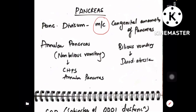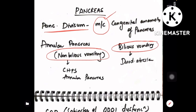The most common congenital anomaly of pancreas is pancreatic divisum. For annular pancreas, the vomiting is non-bilious, whereas bilious vomiting is seen in duodenal atresia. Non-bilious vomiting is seen in two disorders: congenital hypertrophic pyloric stenosis and annular pancreas.